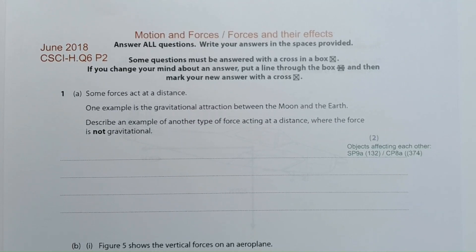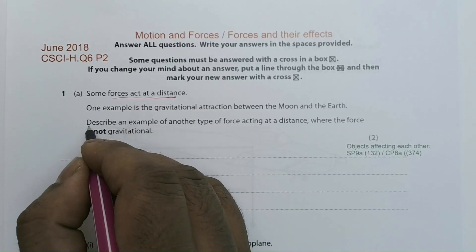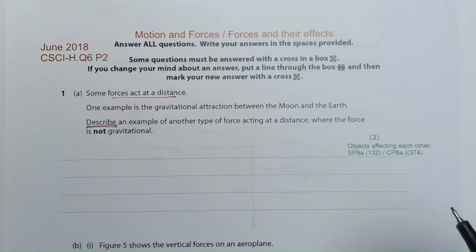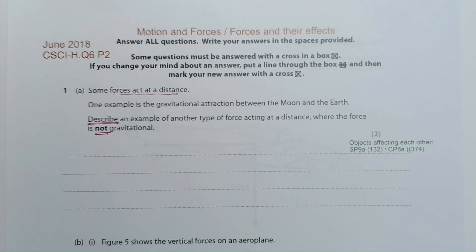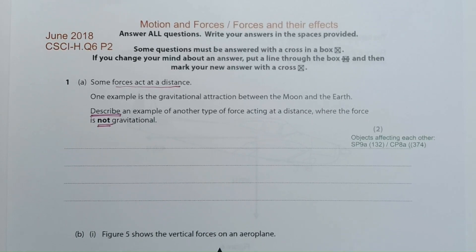Question 1: Some forces act at a distance. One example is the gravitational attraction between the moon and the earth. Describe an example of another type of force acting at a distance where the force is not gravitational. This question is about forces acting at a distance, and they want you to describe another example which is not gravitational. What are the two other forces that act at a distance? One is electrostatic, and the other is magnetism. You will need to describe the forces in a bit more detail.